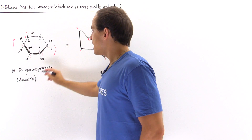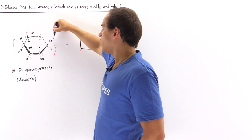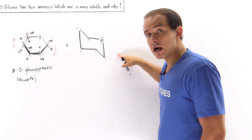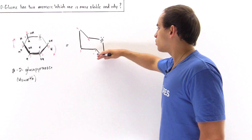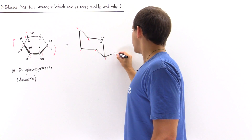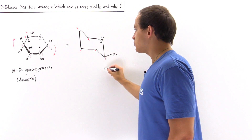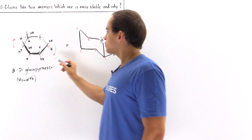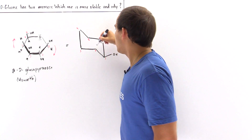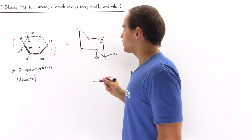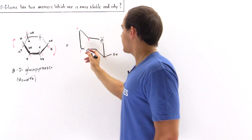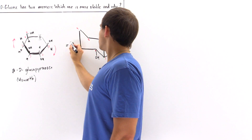Let's begin with carbon number one. In the Haworth form, carbon one contains a hydroxyl group pointing upward. So on carbon one in the chair conformation, the hydroxyl group also points upward — and the upward direction here is equatorial, so it points along the equatorial direction, while the H points downward along the axial. On carbon two, the hydroxyl points downward, and the downward direction on carbon two is axial. On carbon three, the hydroxyl points upward, and the upward direction is equatorial.